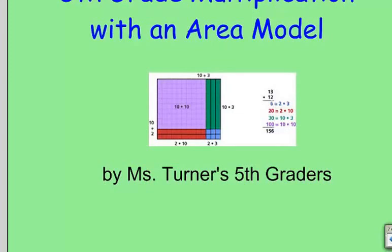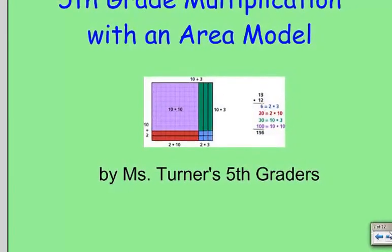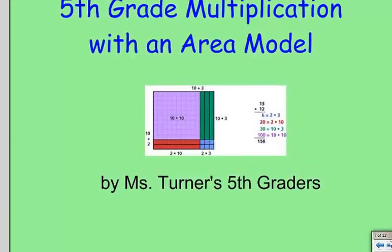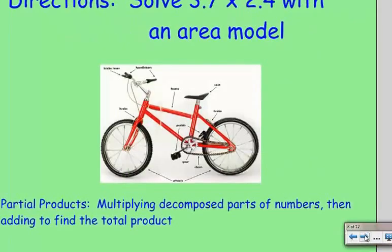Likewise, Ms. Turner's 5th graders are going to show us how to do multiplication of decimals with an area model. And the directions for them were to solve 3.7 times 2.4 with an area model. Now I actually said that wrong. We want to call it 3 and 7 tenths and 2 and 4 tenths and decompose it very similarly. Instead of using tens and ones, we're going to use ones and tenths.